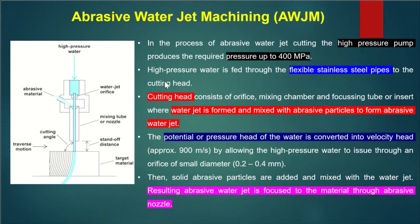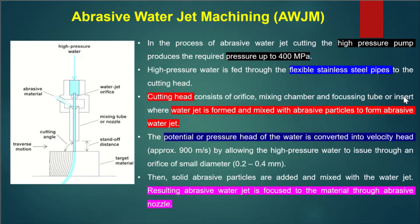For water jet machining, a high pressure pump produces the required pressure of water — up to 400 megapascals. This water is allowed to pass through flexible stainless steel pipes to the cutting head. The cutting head consists of an orifice, a mixing chamber where abrasives are mixed with the water, and a focusing tube insert where the water jet is formed and mixed with abrasive particles.